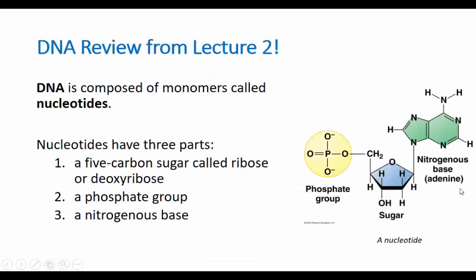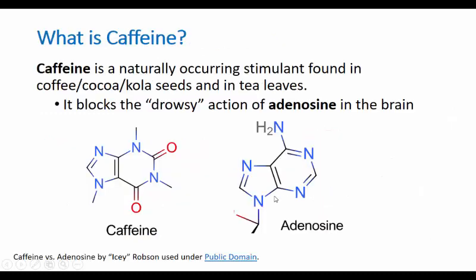Quick review: this is adenine. Original DNA nucleotides were a nitrogen-containing ring, a sugar, and a phosphate group. Adenosine is just the nitrogen-containing ring, and that looks an awful lot like caffeine — a differently shaped nitrogen-containing ring.